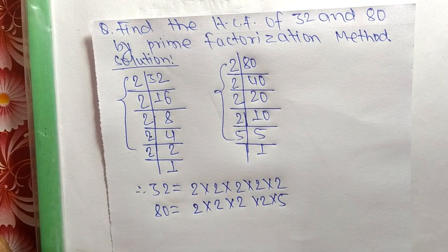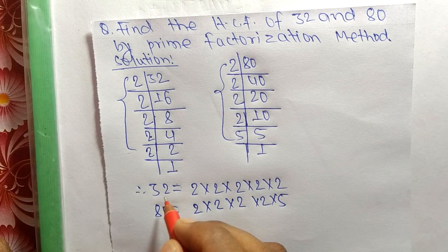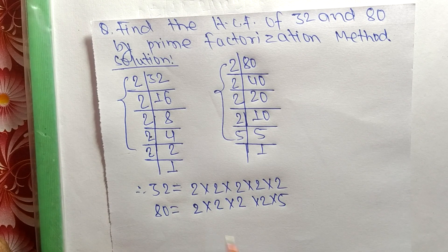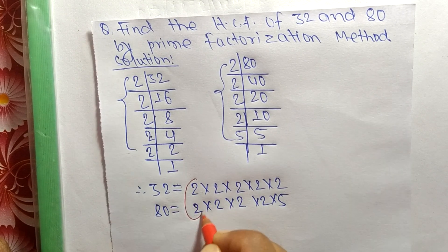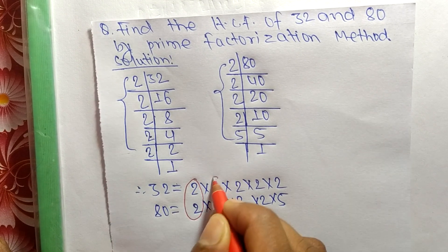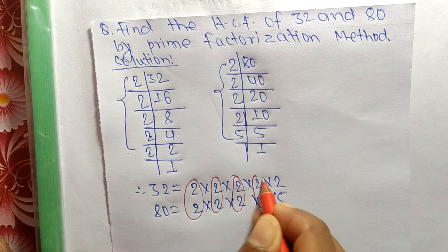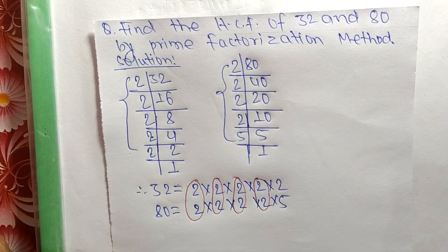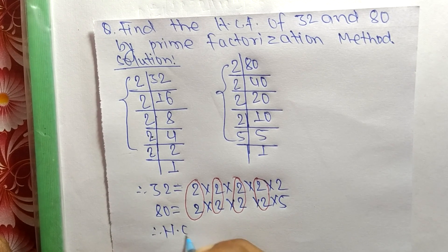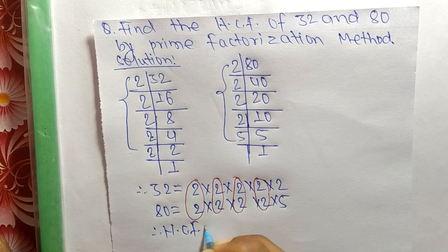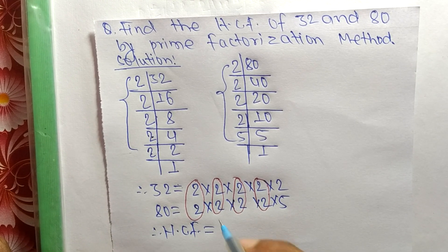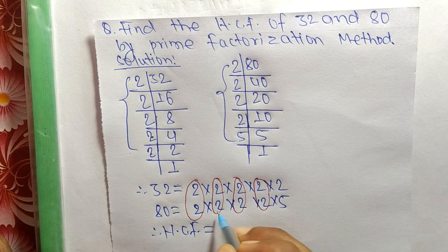Now we find the common factors in the prime factors of 32 and 80. The common factors are: 2, 2, 2, and 2. So these are the common factors.